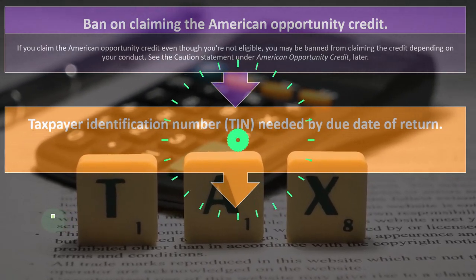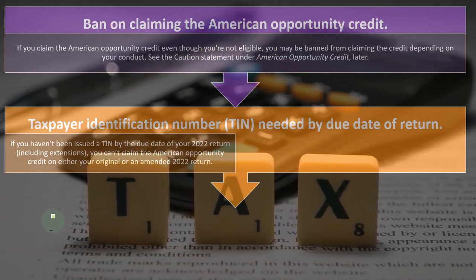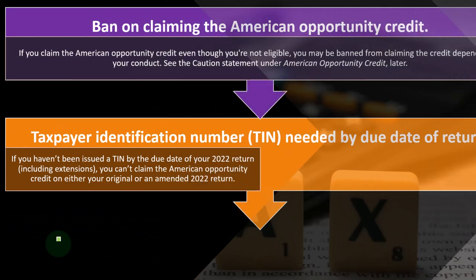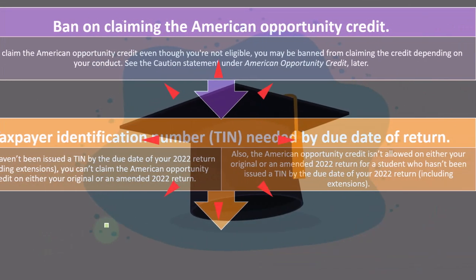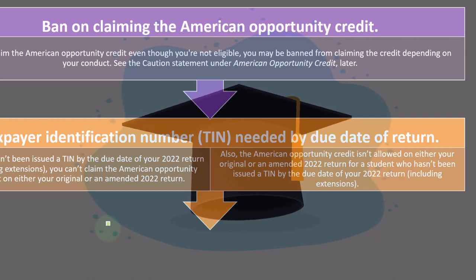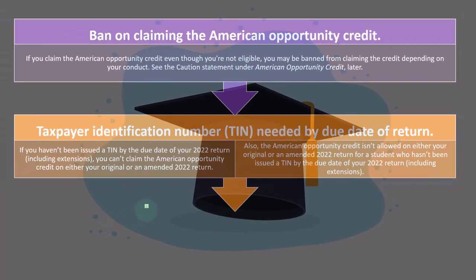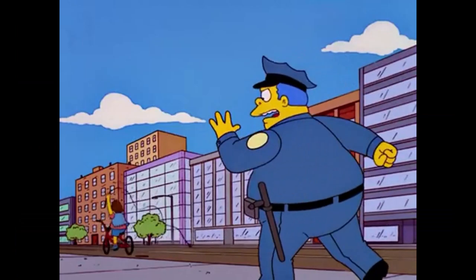Regarding Taxpayer Identification Numbers: the TIN is needed by the due date of the return. If you haven't been issued a TIN by the due date of your 2022 return, including extensions, you can't claim the American Opportunity Credit on either your original or amended 2022 return. Similarly, the American Opportunity Credit isn't allowed for a student who hasn't been issued a TIN by the due date of the 2022 return, including extensions.